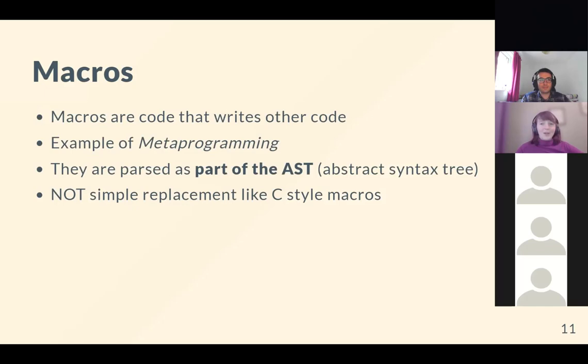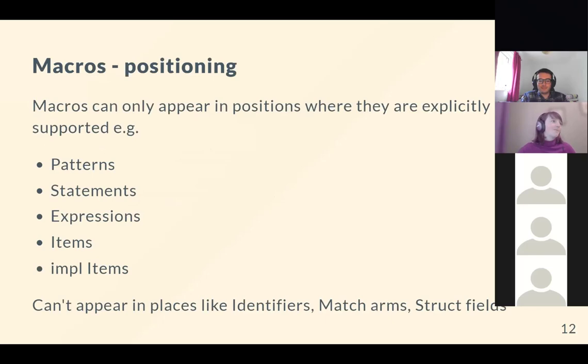Macros are essentially code that writes other code — meta-programming. What makes Rust macros different from C++ macros is that they operate at the AST level, rather than at the purely tokenized or text level. They're done as abstract syntax tree parsing is happening, so they're not a simple text replacement, which gives them much more flexibility and safety. They can only appear in positions where explicitly supported: patterns, statements, expressions, items, and impl items — not in identifiers, match arms, or struct fields.